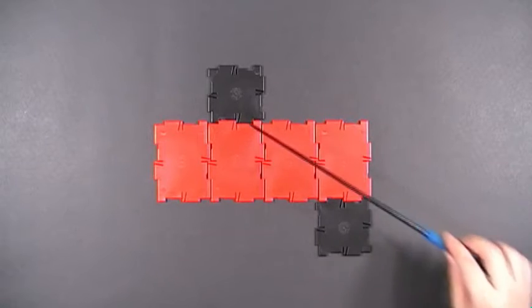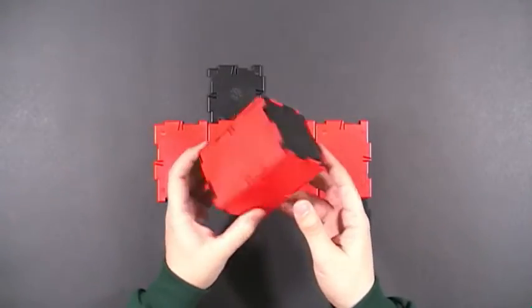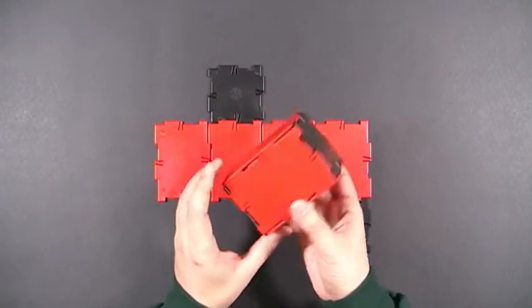This square base prism has rectangles for the sides. This is what it's going to look like. You can also consider this a rectangular base prism or a cuboid.